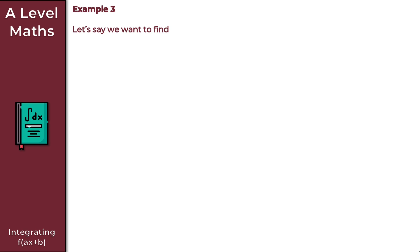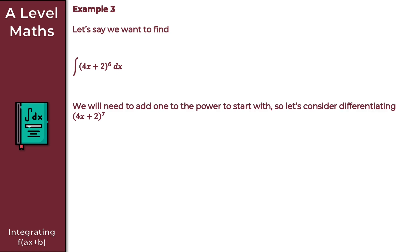Moving on to Example 3. We want to integrate (4x + 2)^6 with respect to x. What we need to do is add 1 to the power, so we take y = (4x + 2)^7. We then differentiate y with respect to x using the chain rule, which gives us dy/dx = 28(4x + 2)^6.